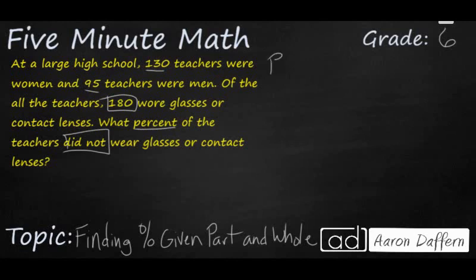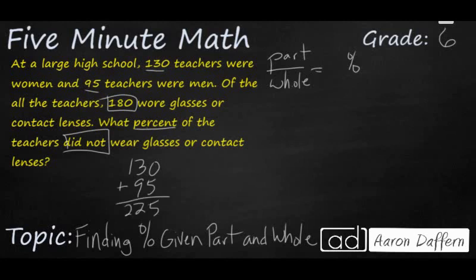Remember, when we're looking at a proportion, we need a part and the whole. Once we have those two, we can divide and get what we're looking for, which is our percent. But in this case, we don't have either of those. The whole number of teachers is going to be 130 plus 95, because 130 were women and 95 were men. So our whole — not given to us — is 225.